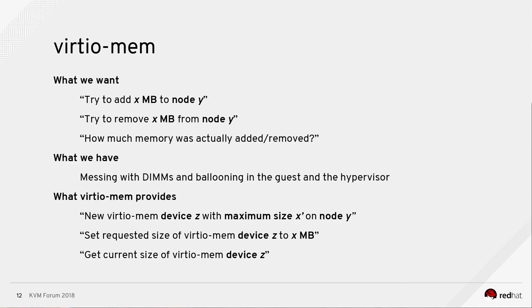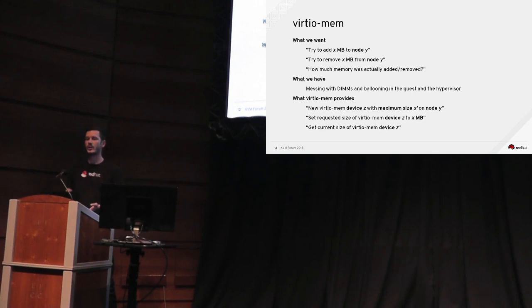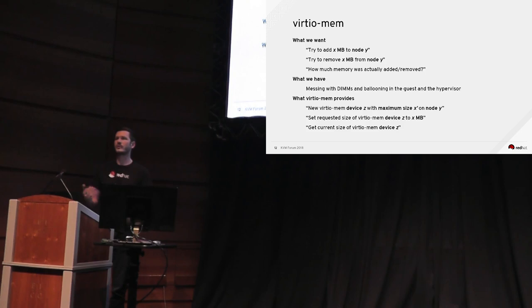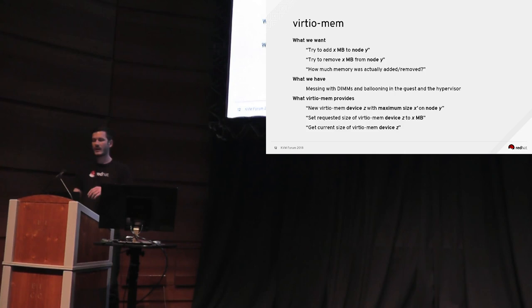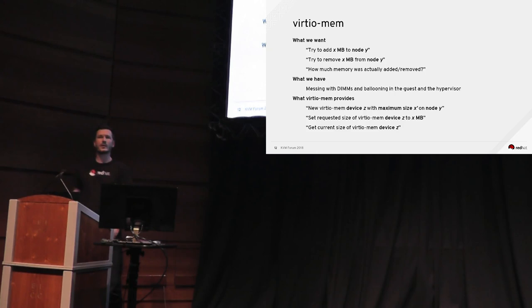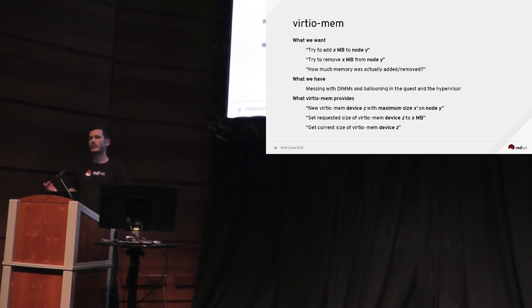What virtio-mem provides instead of the current complexity of DIMMs, slots, and ballooning is: you create a virtio-mem device, assign it to a certain NUMA node, assign it a maximum size, and then simply set a requested size on the device. The guest OS will try to reach the requested size by plugging or unplugging blocks. You can also query the current size to see how much memory the OS is actually using.